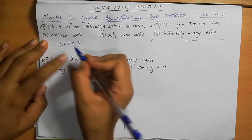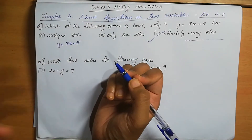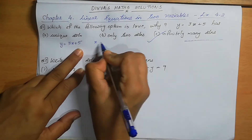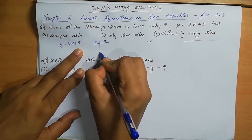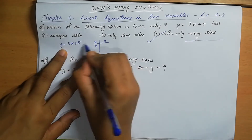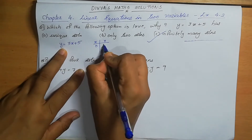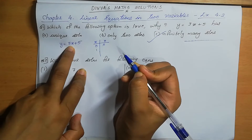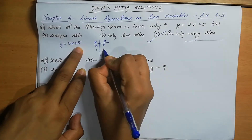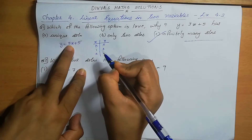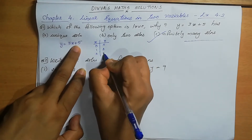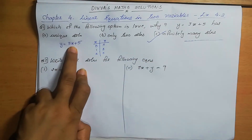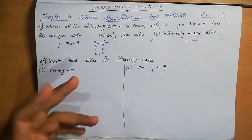For each value, when you substitute a value of x, the value of y will change. Taking two columns x and y: if x=0, y=5. If x=1, y = 3×1 + 5 = 8. If x=2, y = 3×2 + 5 = 11. If x=3, y = 3×3 + 5 = 14.